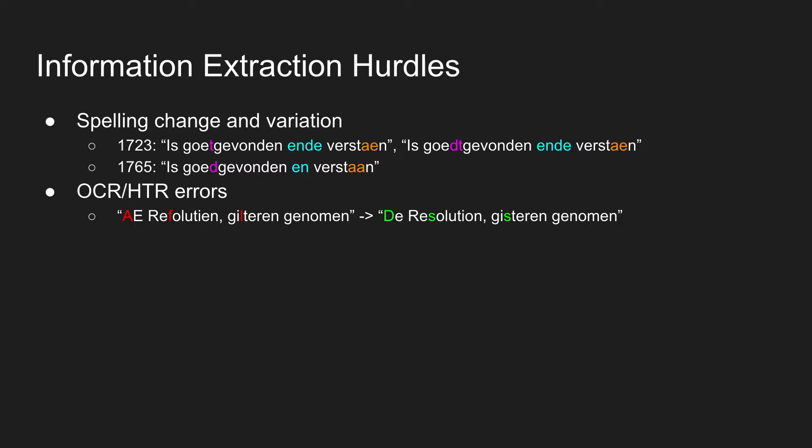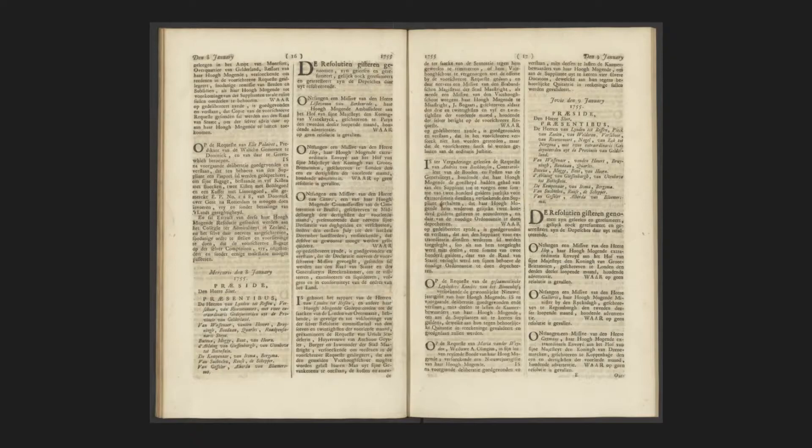In addition to the extraction process, there are additional hurdles like historic language use — it's different from modern Dutch, so tools trained on modern Dutch don't work well on historical Dutch. Even within this corpus, language use and spelling changed over time with lots of variation. On top of that, there are recognition errors from the OCR and HTR process, which make it even more challenging to do simple keyword search and information extraction.